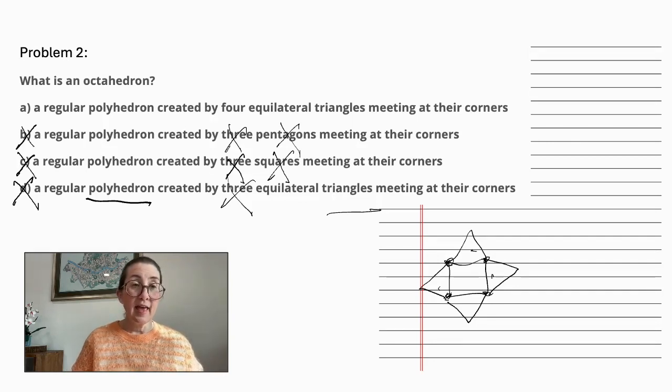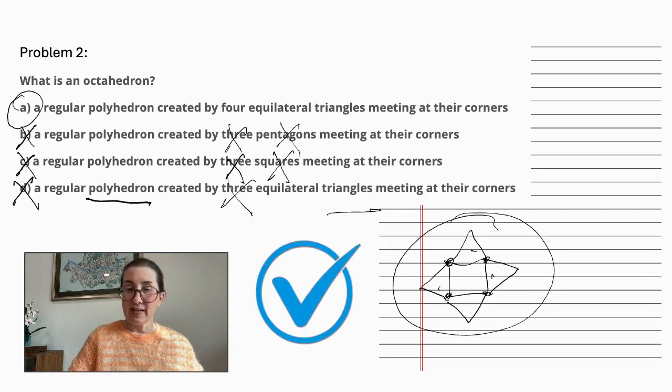A regular polyhedron created by four equilateral triangles meeting at their corners. This is the correct answer.